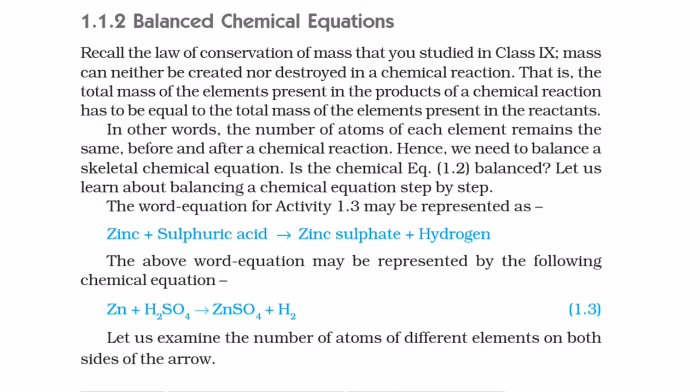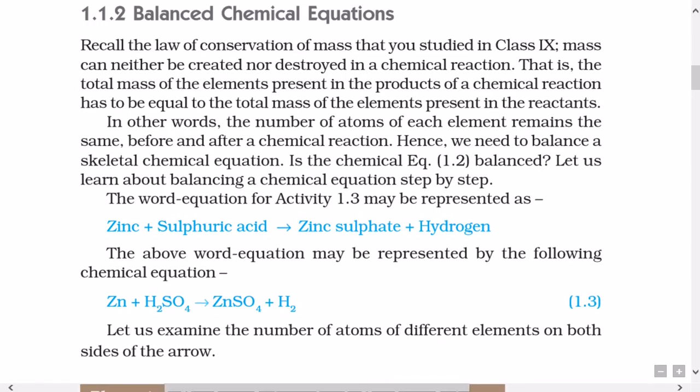1.1.2 Balanced chemical equations. Recall the law of conservation of mass that you studied in class 9th. Mass can neither be created nor destroyed in a chemical reaction. That is, the total mass of the elements present in the products of a chemical reaction has to be equal to the total mass of the elements present in the reactants. In other words, the number of atoms of each element remains the same before and after a chemical reaction. Hence, we need to balance a skeletal chemical equation. Is the chemical equation 1.2 balanced?